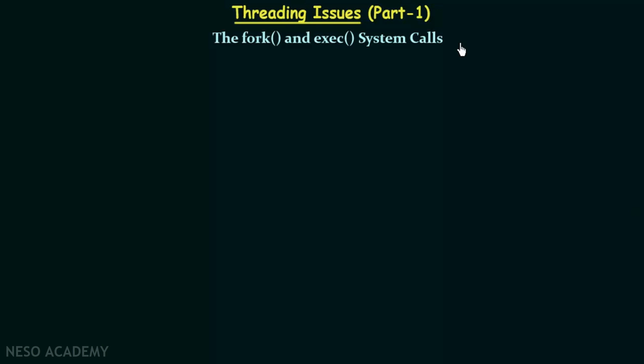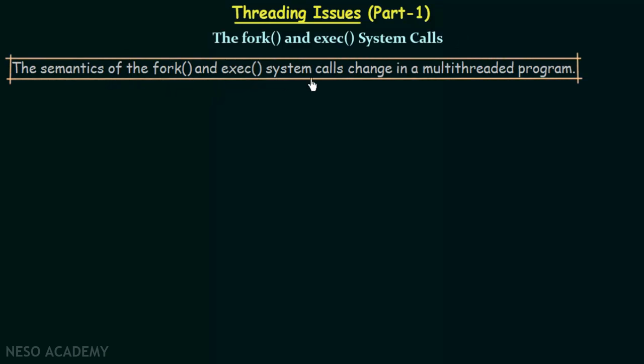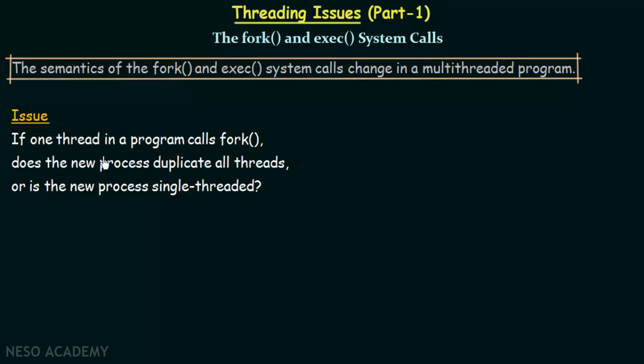The issue is how fork and exec system calls will behave when threading is involved. The semantics of fork and exec change in a multi-threaded program because a process can consist of multiple threads. If one thread in a process requests a fork system call, the question is: will all the threads present in that process be duplicated, or will only the thread that called fork be duplicated? This is the core issue.